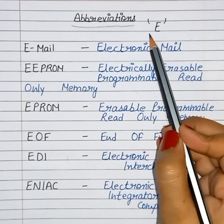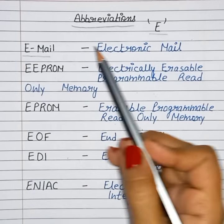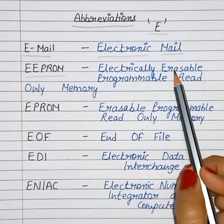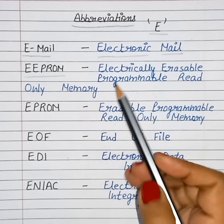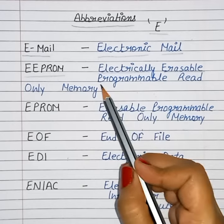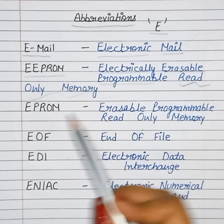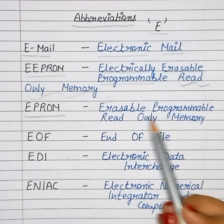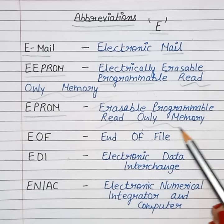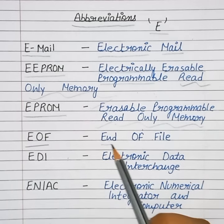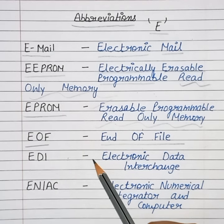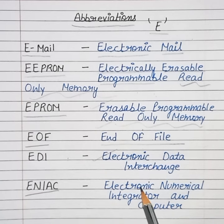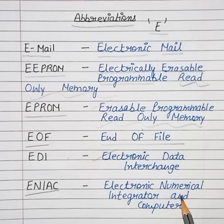Abbreviations: E-mail — Electronic Mail. EEPROM — Electrically Erasable Programmable Read-Only Memory. EPROM — Erasable Programmable Read-Only Memory. EOF — End of File. EDI — Electronic Data Interchange. ENIAC — Electronic Numerical Integrator and Computer.